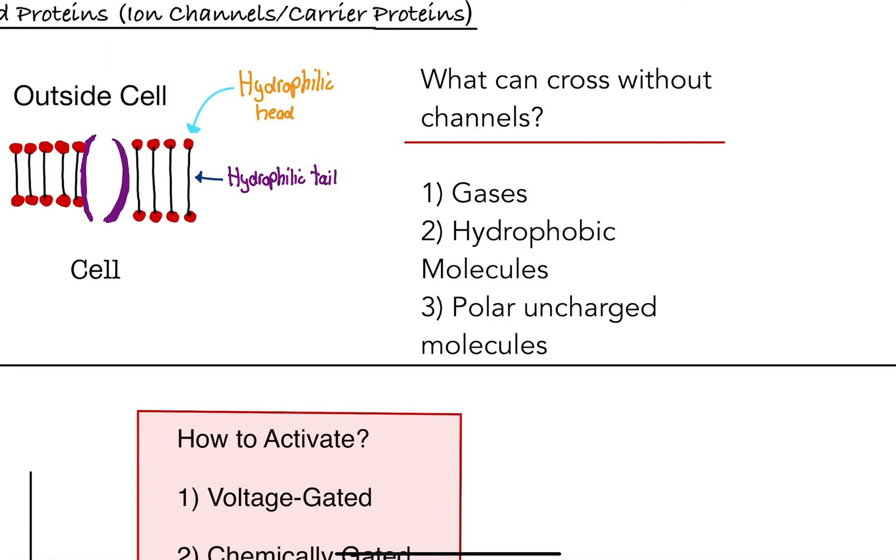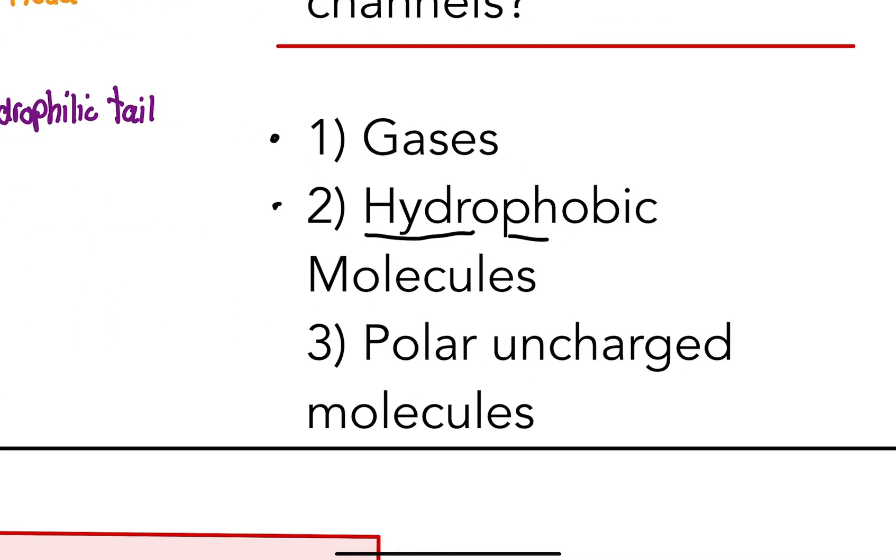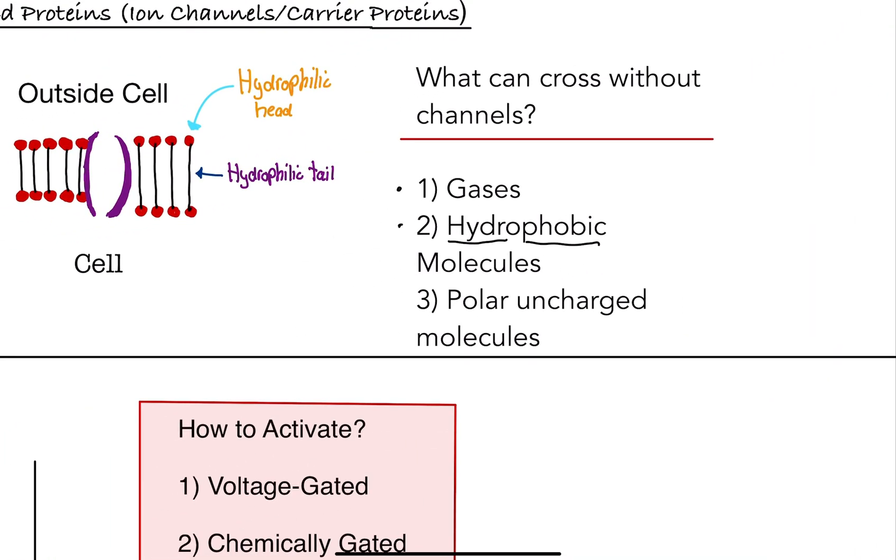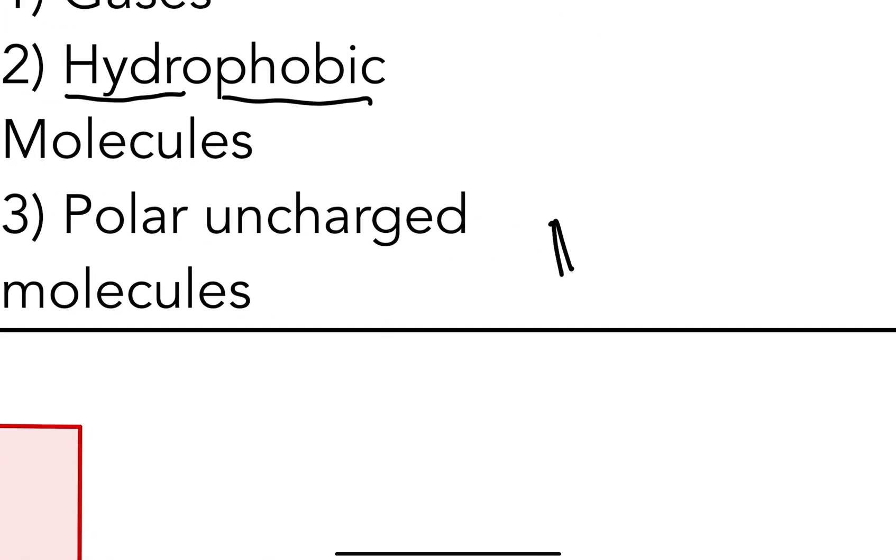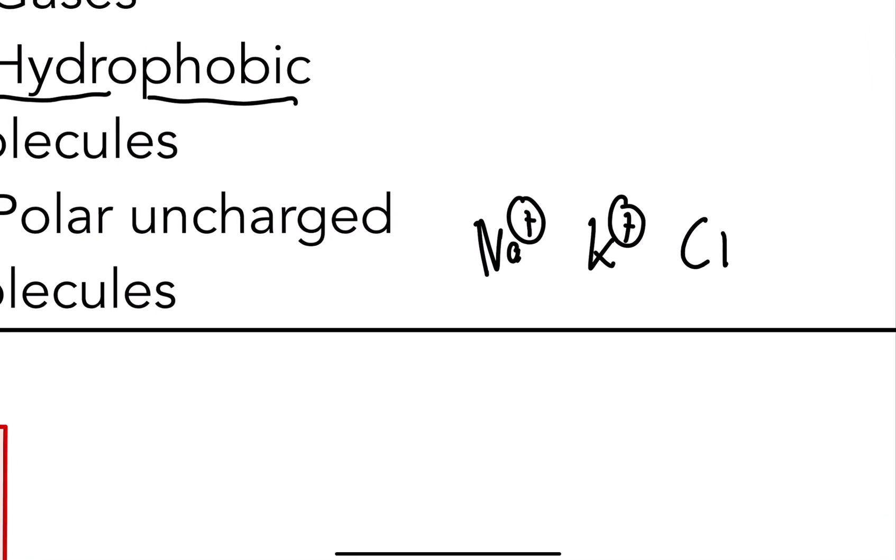Well, gases can go through. Hydrophobic molecules or molecules that do not like water. Like think about hydro as water and phobic as like phobia. They're basically allergic to water. So those can go through. And polar uncharged molecules. So like I said, sodium is charged. Potassium is charged. Chloride is charged. Iron is charged. All of these are charged. That's why they require channels.